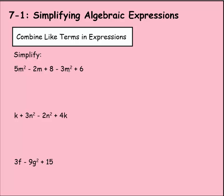I also notice that the variables are the same as well. So that means these are like terms. I have 5m². Then I always take the sign before, so I have minus 3m² or negative 3m². Positive 5m² minus 3m² would be 2m².